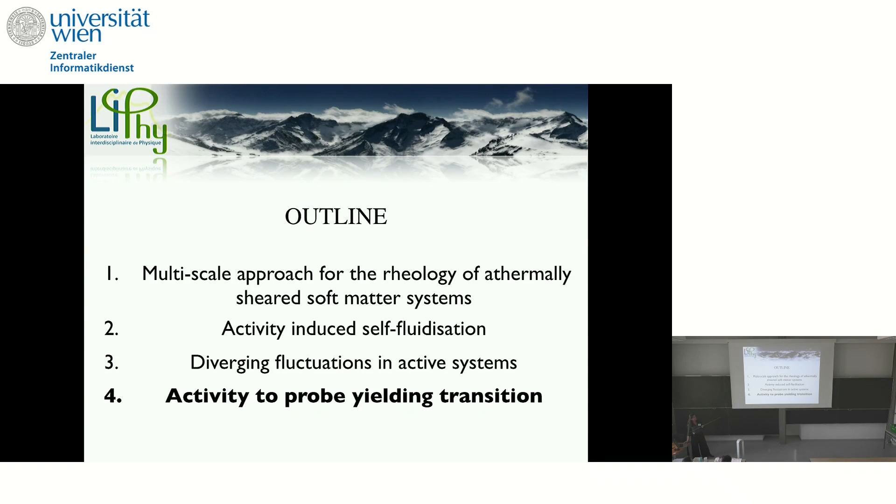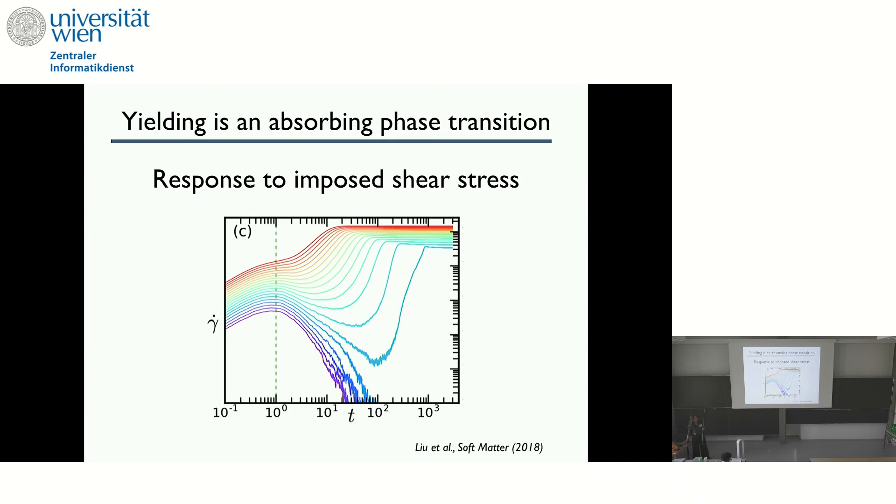Then the last example that I will talk about is how we use activity not to study real active systems, but rather to probe the yielding transition, which is the transition in yield stress fluids. And to do so, we look at the response to an imposed step in shear stress. And Suzanne already talked about this. When you impose the stress, you can have two types of scenarios. Either if you're below the yield stress in the athermal system, you can slow down and eventually get stuck. Or if you're above the yield stress, you will slow down too. This is the creep and eventually accelerate the dynamics and go to the steady state.